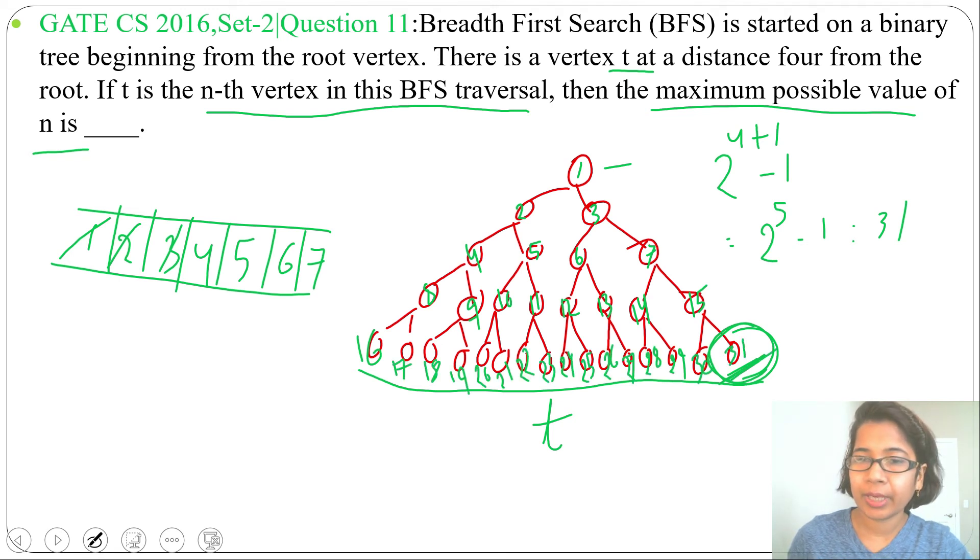Just understand the question: indirectly, it's asking how many nodes are possible in a binary tree having height 4. So the number of nodes possible is 31.